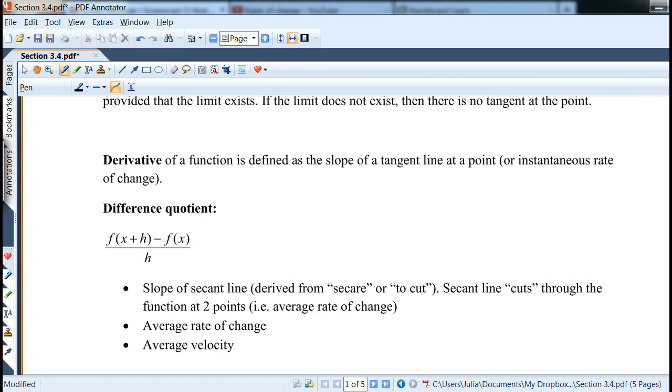And what it represents is already some of the concepts that we've seen. First of all, it represents slope of a different term. We're going to use the term secant line, which means to cut. And secant line cuts through the function at two points, which is very much the average rate of change or average velocity as we've seen already.